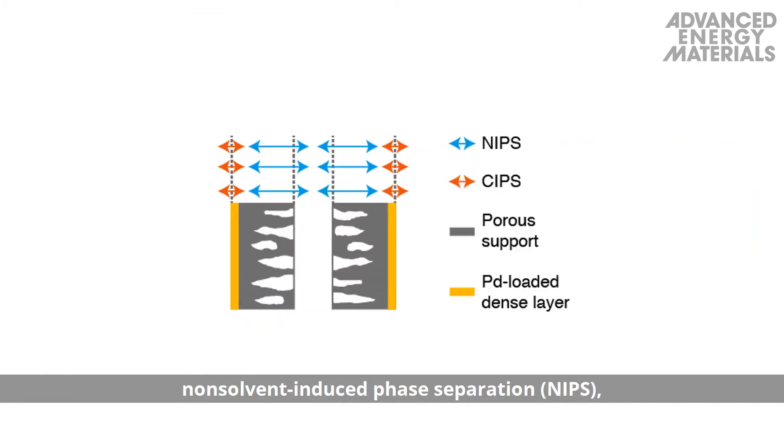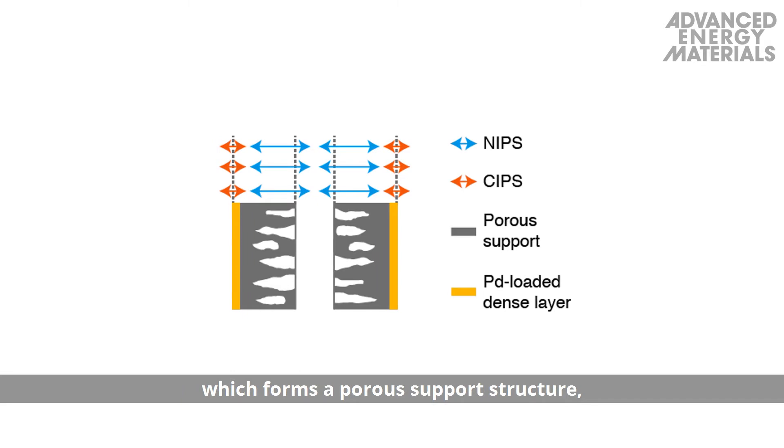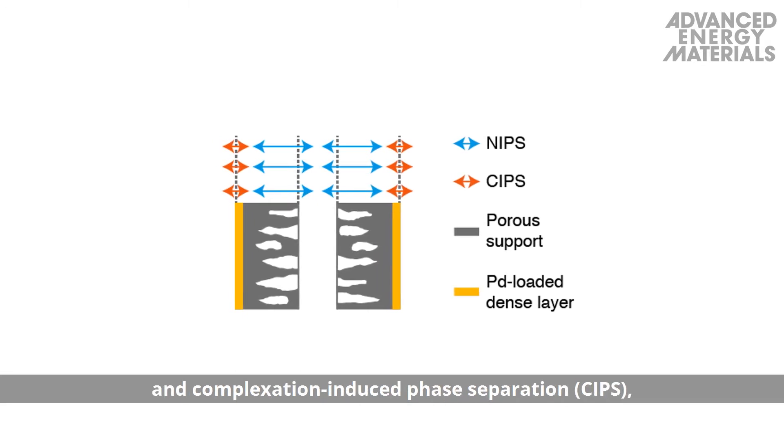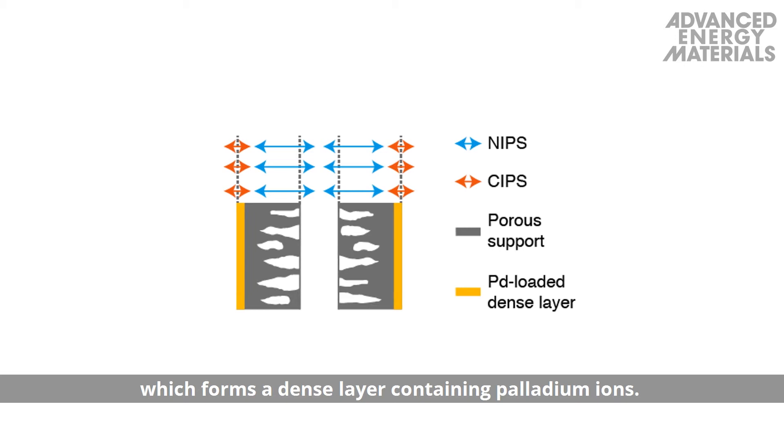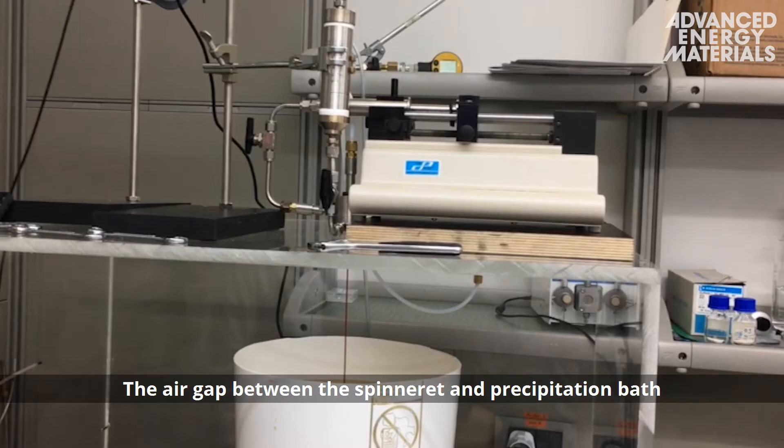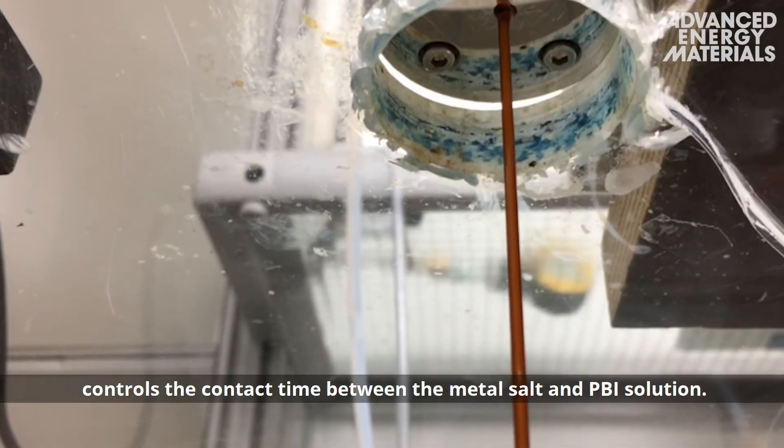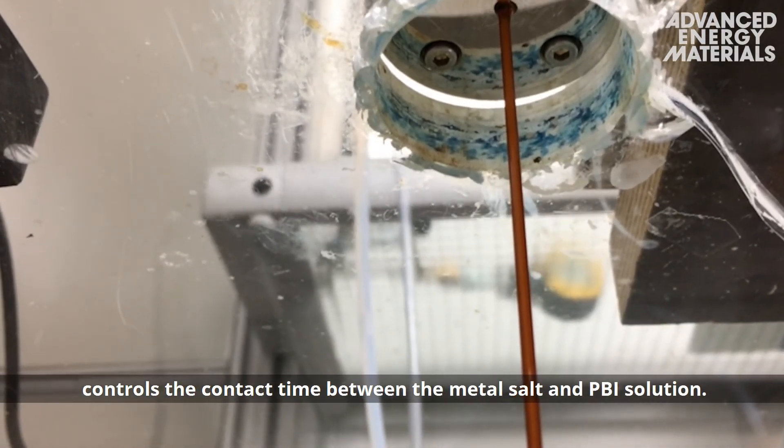Non-solvent-induced phase separation, which forms a porous support structure, and complexation-induced phase separation, which forms a dense layer containing palladium ions. The air gap between the spinneret and precipitation bath controls the contact time between the metal salt and the PBI solution.